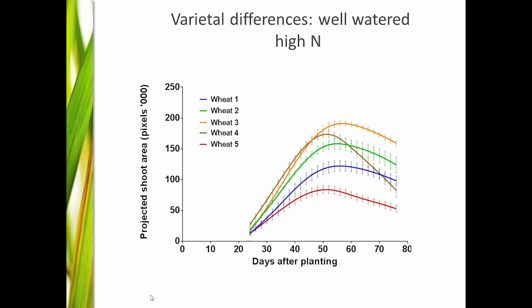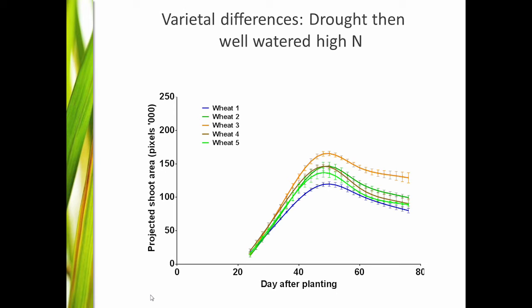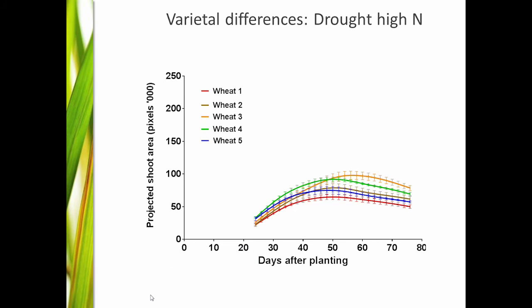Comparing individual varieties, you can see genotypic differences. This is elite germplasm, so we weren't sure we'd get much variation. But these plants well watered with high nitrogen show clear differences. Again with drought then well watered, you can see differences between the germplasm, and likewise with drought at high nitrogen. So we're interested in what those genotypic responses reflect.